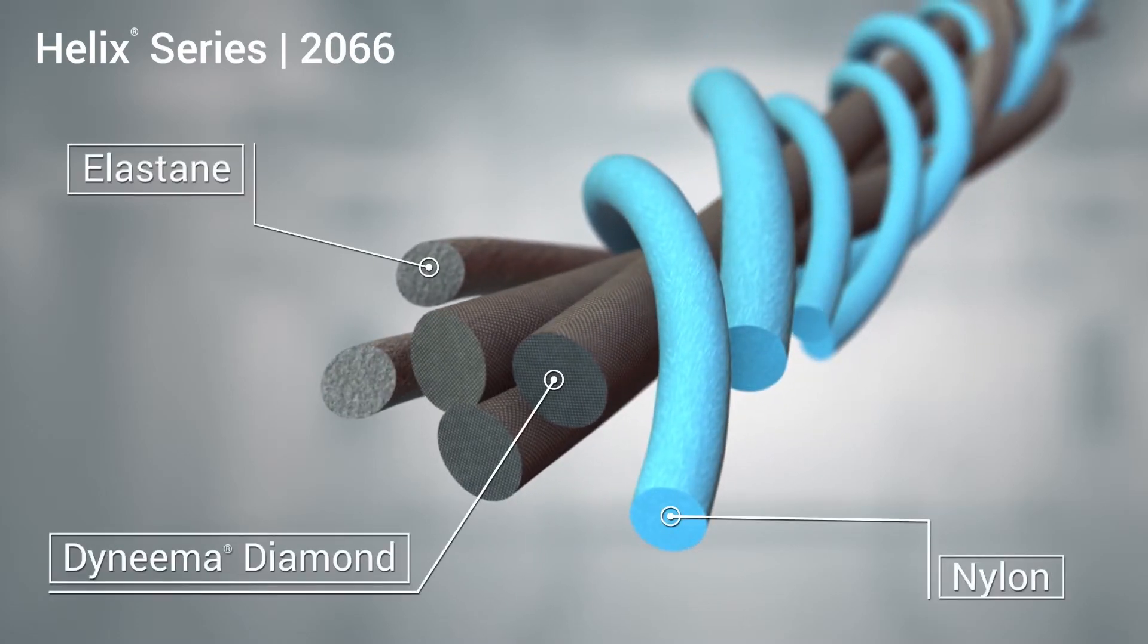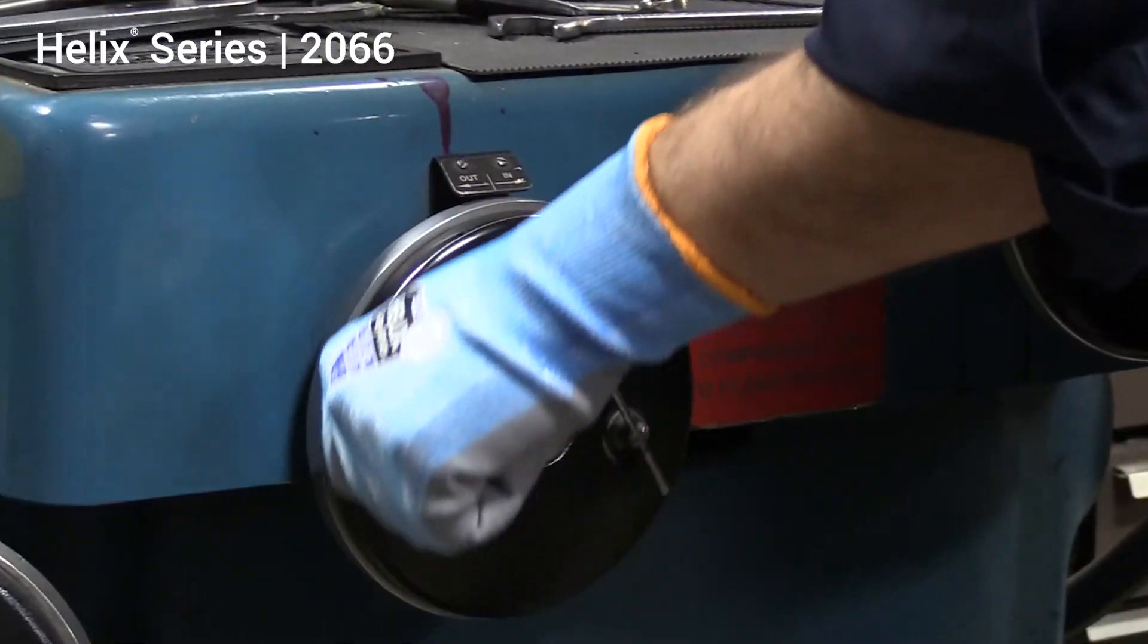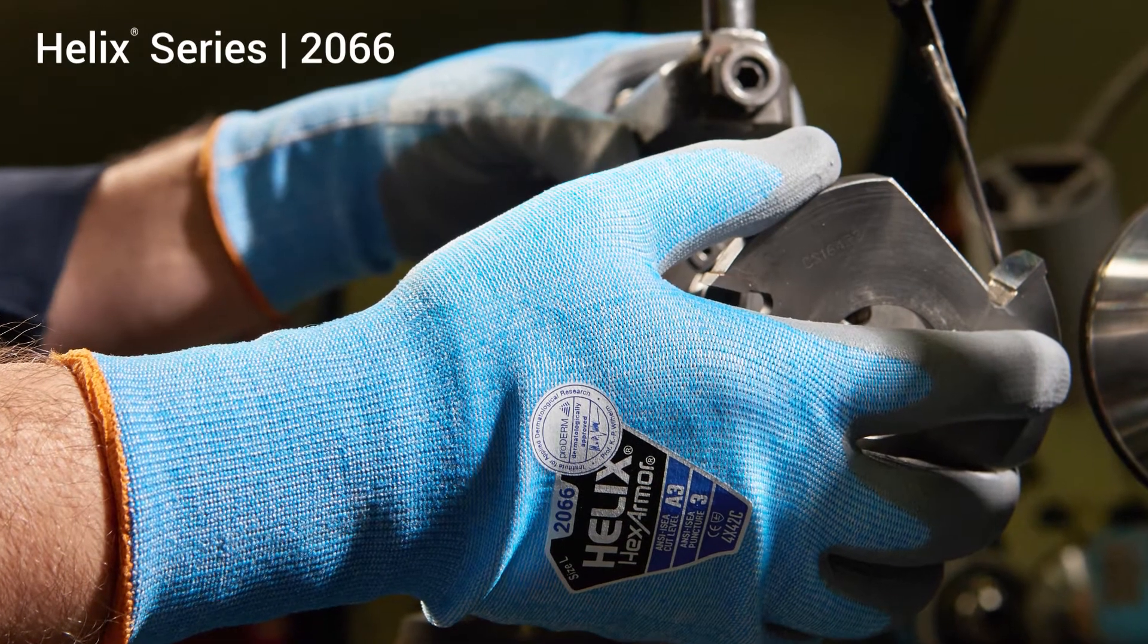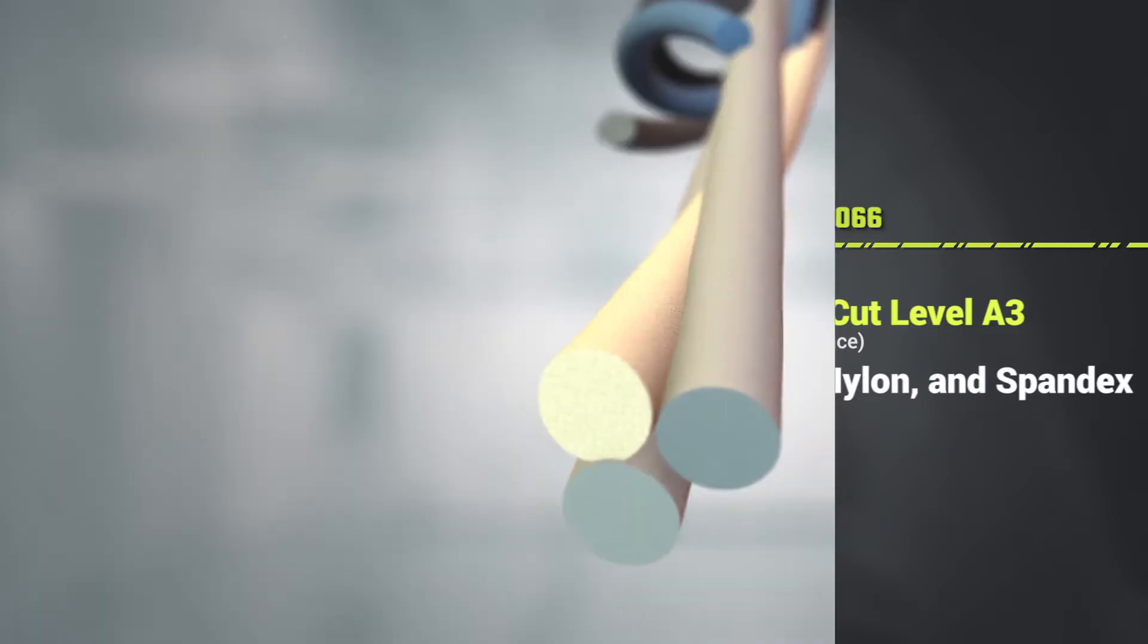but with a much lighter, cooler, and more flexible feel. The Helix 2066 uses this powerful knit blend combined with an extraordinary fit in a knit configuration that doesn't trap heat like other cut-resistant materials. High cut resistance with